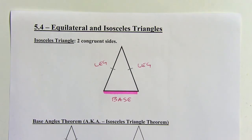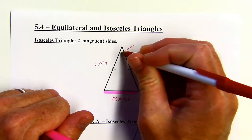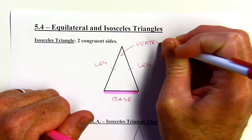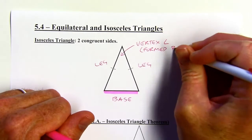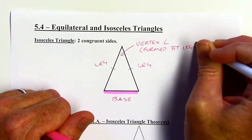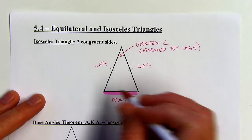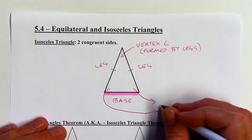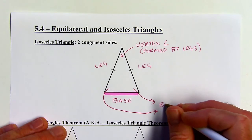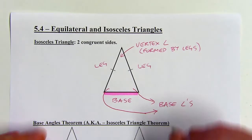There are also special names for the angles in an isosceles triangle. The angle formed by the two legs is called the vertex angle. It doesn't have to be at the top of the triangle because you could flip the picture upside down — it's always the angle formed by the two legs. The two angles that are touching the base are called the base angles.